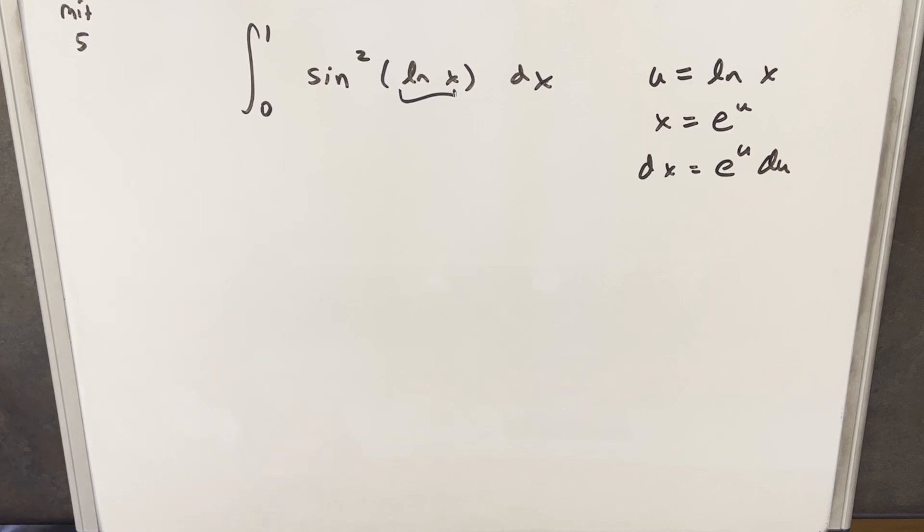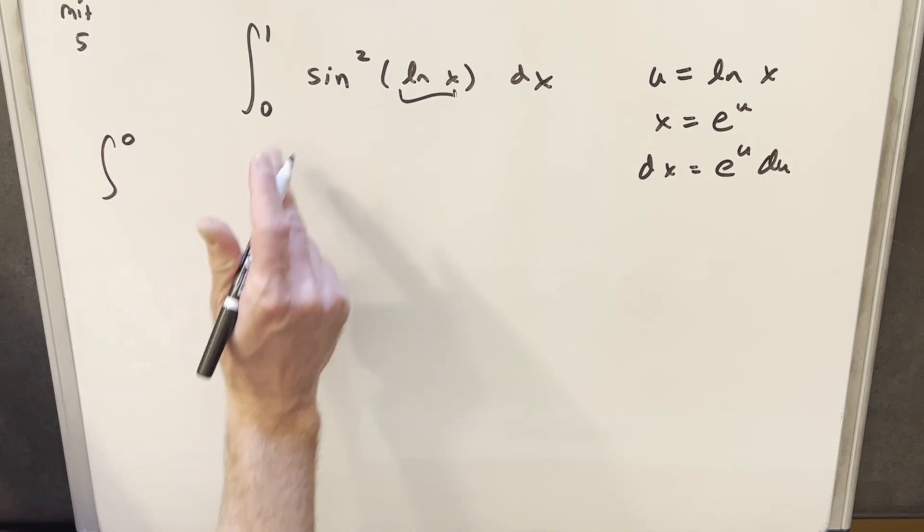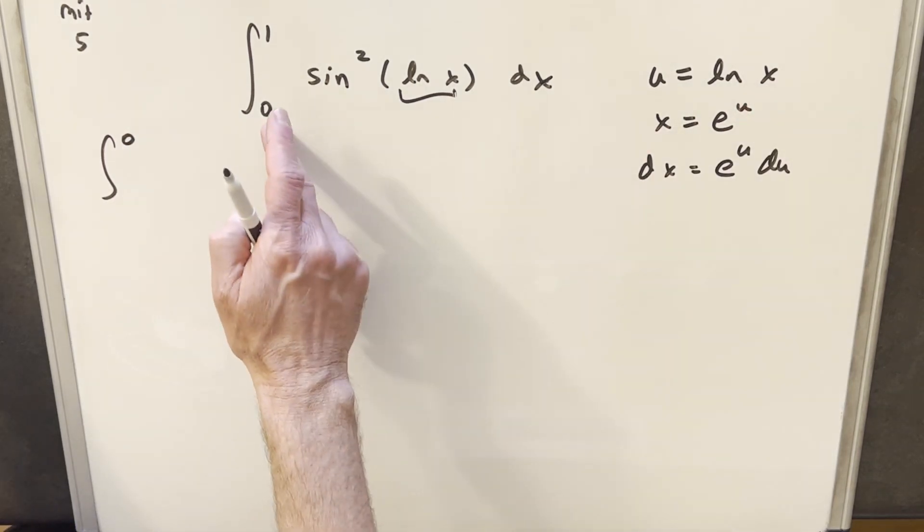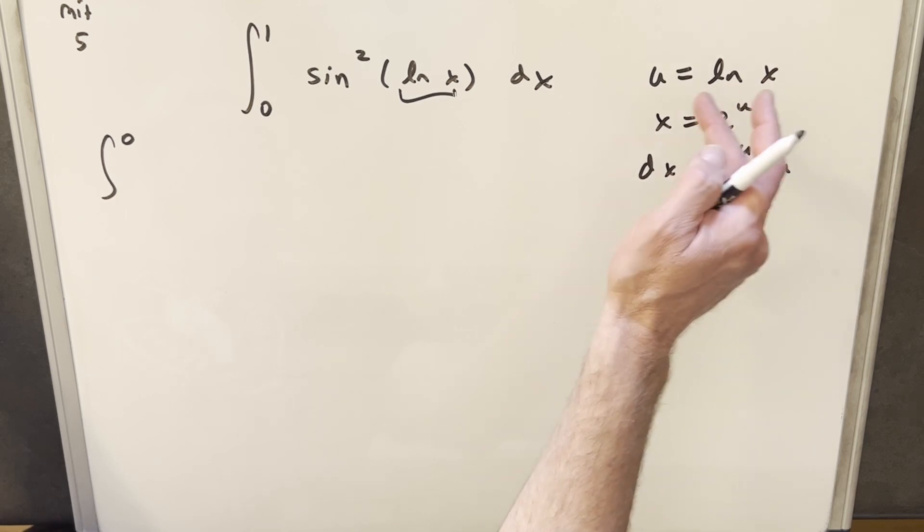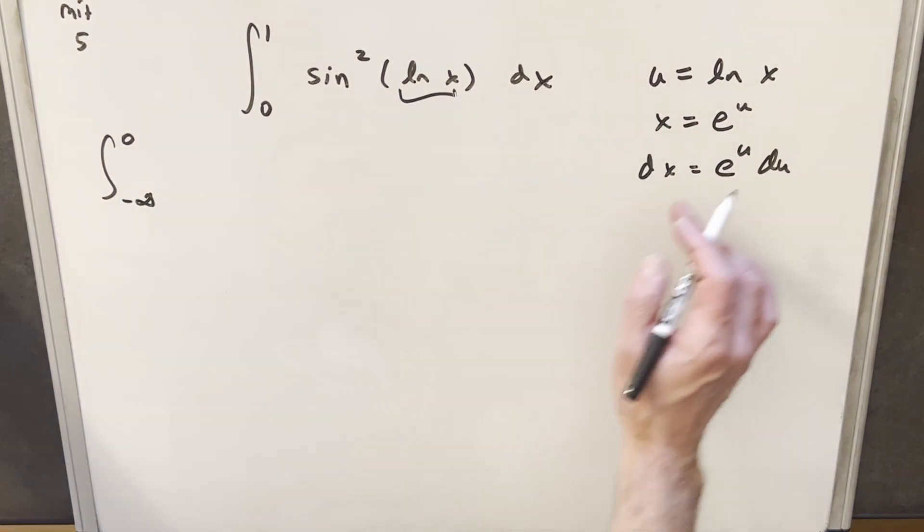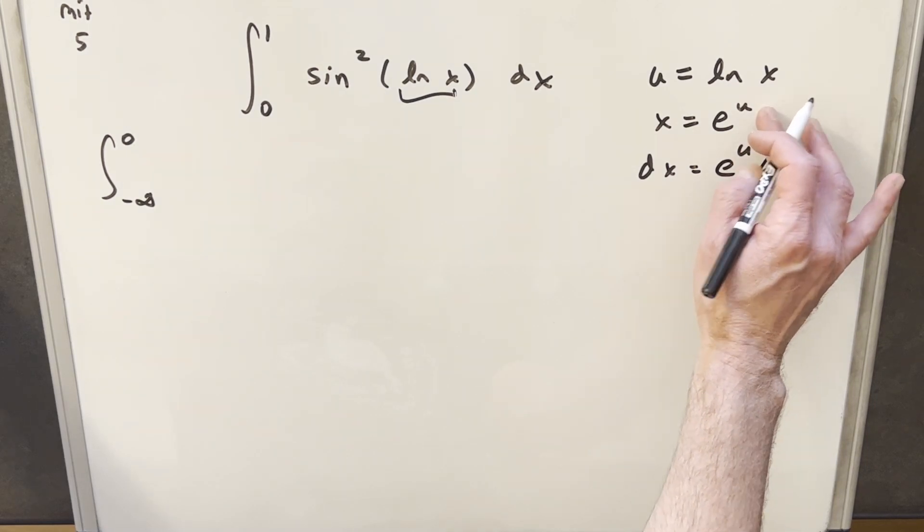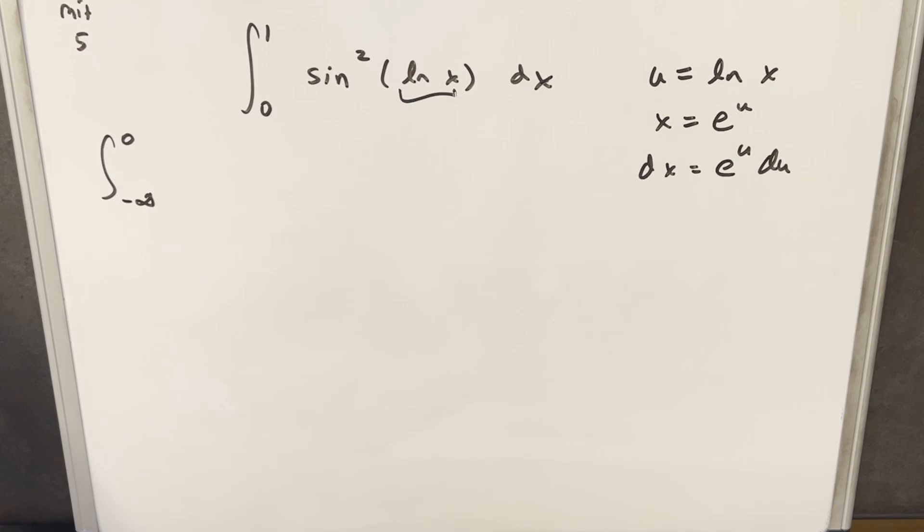I'm going to go ahead and make this substitution first. So plugging a 1 in here, natural log of 1 is going to be 0. And plugging 0 in, natural log of 0 doesn't exist, but that happens when u is approaching minus infinity. Notice if we use this equation, e to the minus infinity, when e's going to minus infinity, x is going to 0.